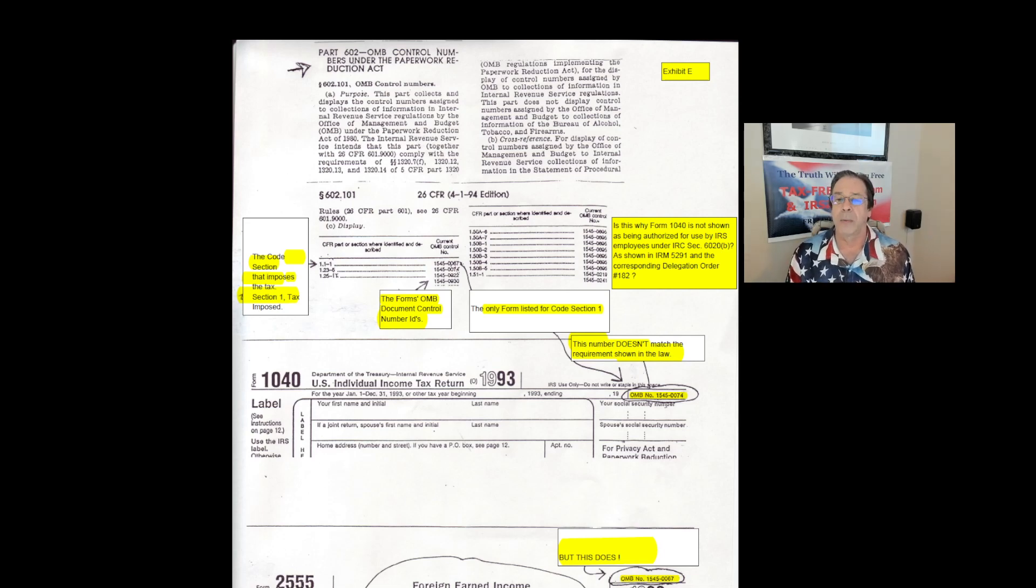I thought today might be a good time to walk you through how to use the law to determine what form is required by law to be filed in conjunction with the section 1 income tax imposed, and just exactly what result that legal investigation leads you to. Previous to 1980 it was very hard to do this because the government hadn't put in place any mechanism